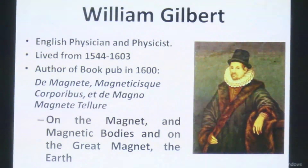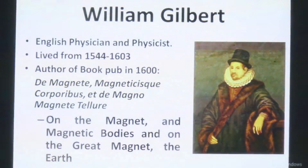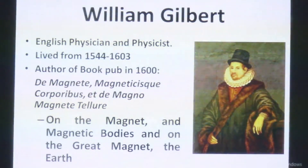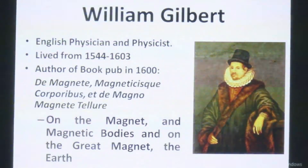Today we give three technical names to the elements Gilbert identified: angle of inclination, angle of declination, and horizontal component of Earth's magnetic field. In his book, Gilbert had also attributed gravitational attraction of masses to Earth's magnetic property, but that later came out to be the attribute of mass which we state as Newton's law of gravitation — that two masses attract each other.